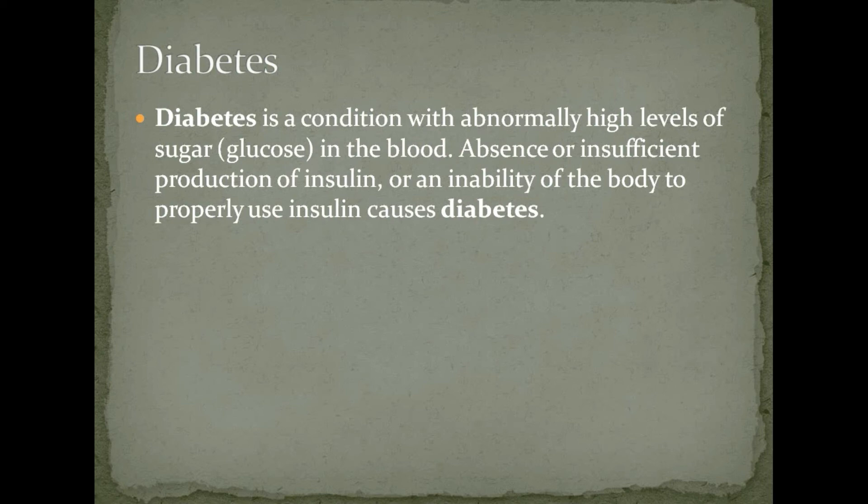Now the final topic: diabetes. Diabetes is a condition with abnormally high levels of glucose in the blood. It is caused by the absence or insufficient production of insulin, or the inability of the body to properly use insulin. This can cause dehydration. A method of knowing you have diabetes is constantly needing to urinate, and your urine will contain sugar, which can be very harmful and even lead to death.